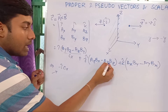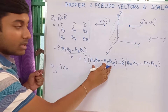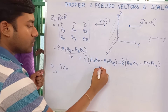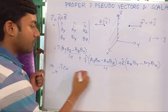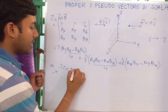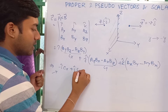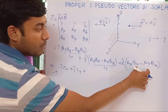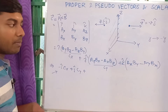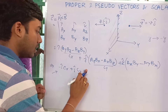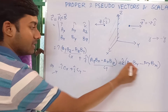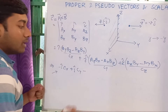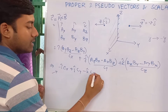Now for the y-component term cy: no y terms are present in that component of the cross product, so it remains the same — plus ĵ·cy. And for the z-component cz: there are two terms, By and Ay, both transforming to minus, so we get another minus that cancels, and it becomes +k̂·cz.